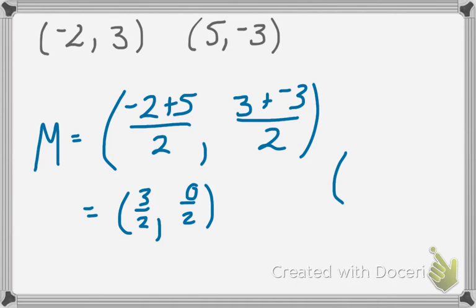Now the 3 over 2, this is where sometimes you'll see it left as 3 over 2, or you could write it as 1 and 1 half. The 0 over 2 would simplify to just 0.